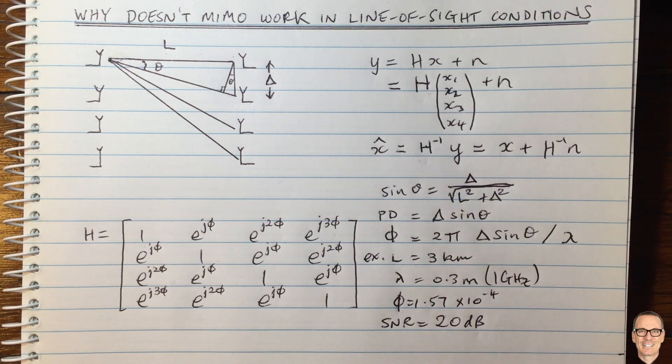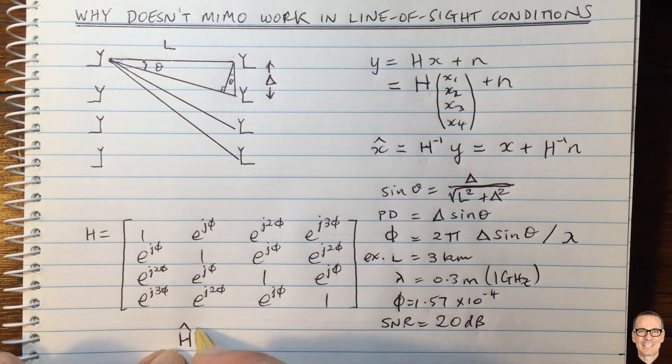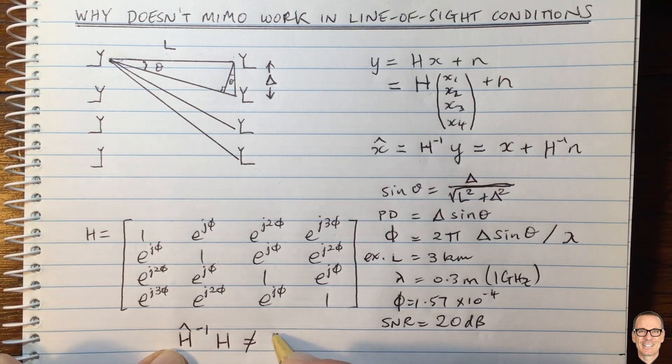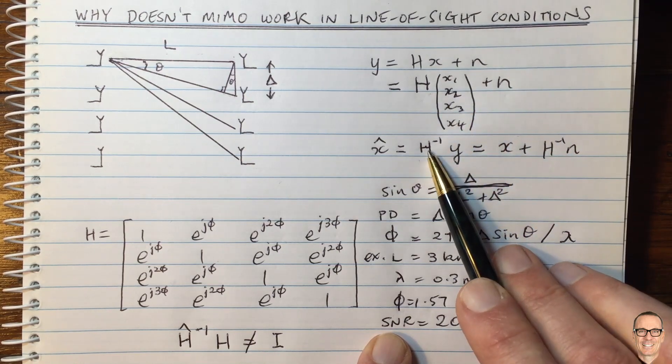when you do this inverse here, you're not going to be getting the identity matrix. We will be writing H estimate, which is our estimate of H, now inverted, times H does not equal the identity matrix. That's because of the noise in the system, in the noise trying to estimate the values of H.